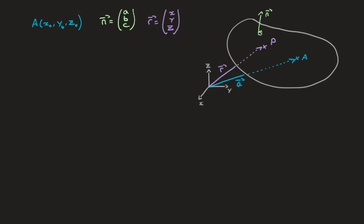To reach the scalar product form of a plane's equation, we consider this yellow vector joining point A to the generic point P. Since both A and P are contained in the plane, this yellow vector must also be contained in the plane. Furthermore, using the fact that P has position vector r and A has position vector a, this yellow vector is in fact the vector r minus a.